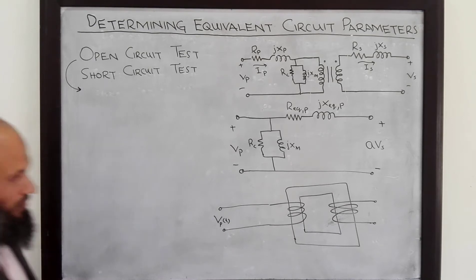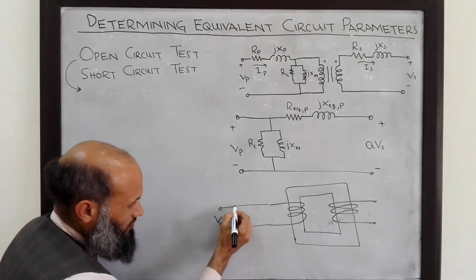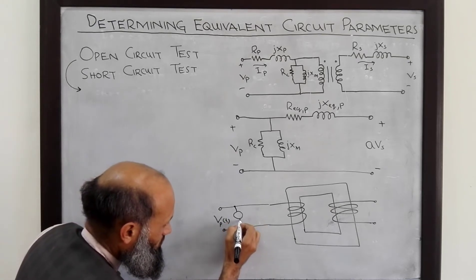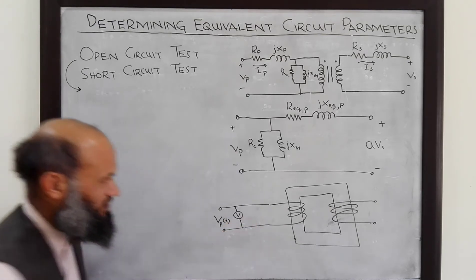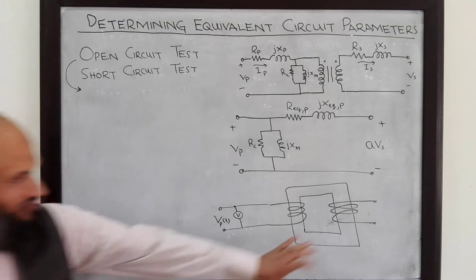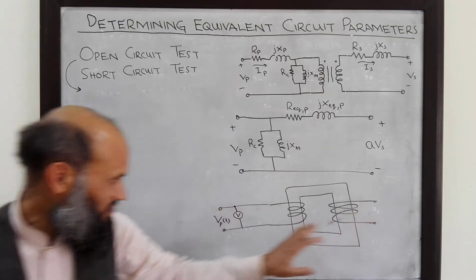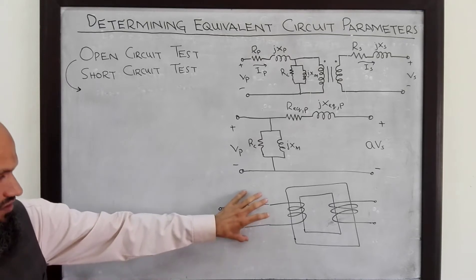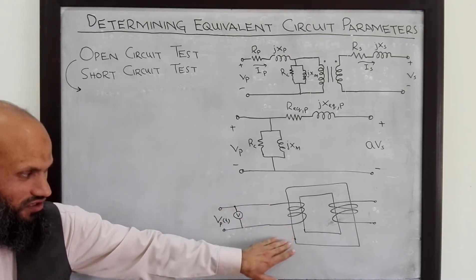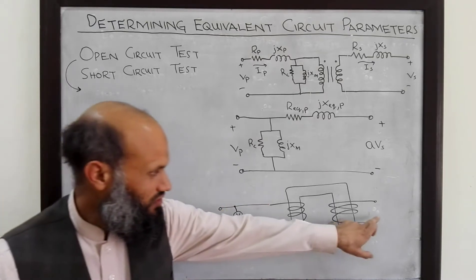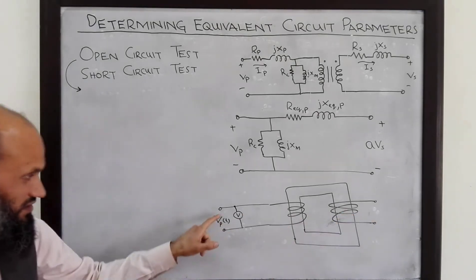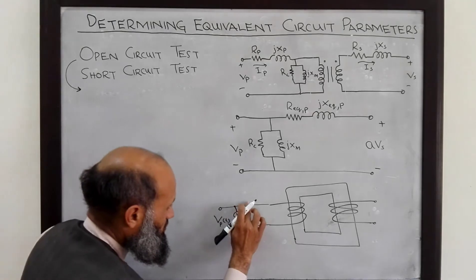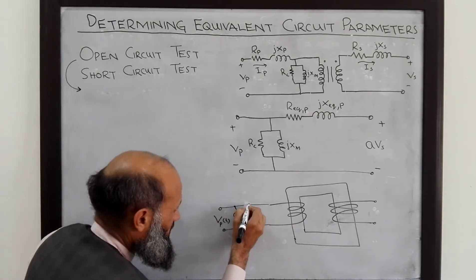We measure the applied voltage using a voltmeter. Ideally, if the secondary is open circuited, no primary current should flow. However, this is not an ideal transformer, so even with the secondary open circuited some current will flow on the primary. We also measure this primary current using an ammeter.